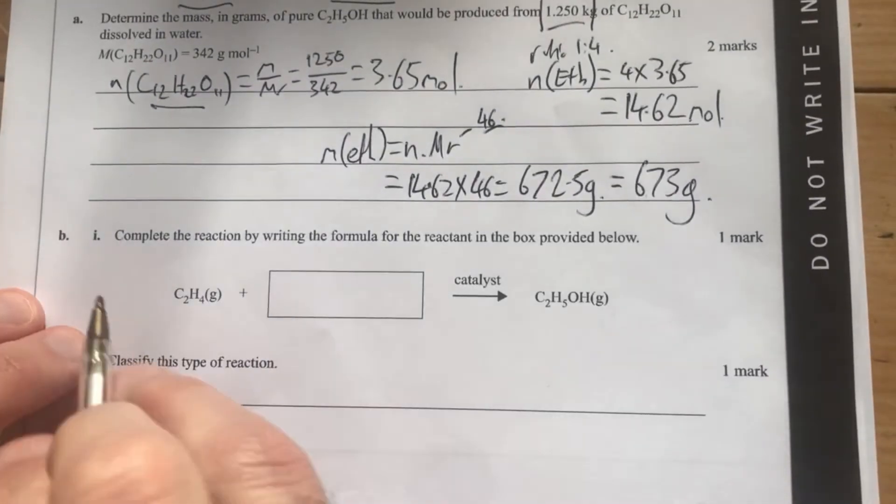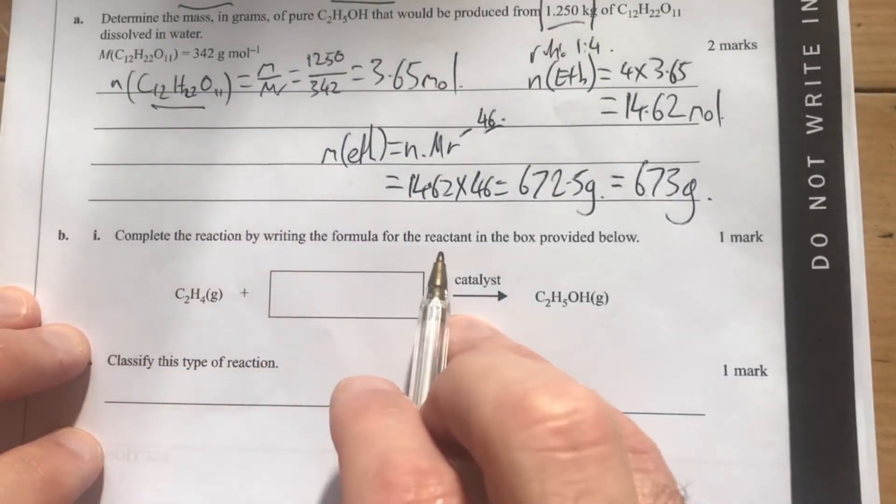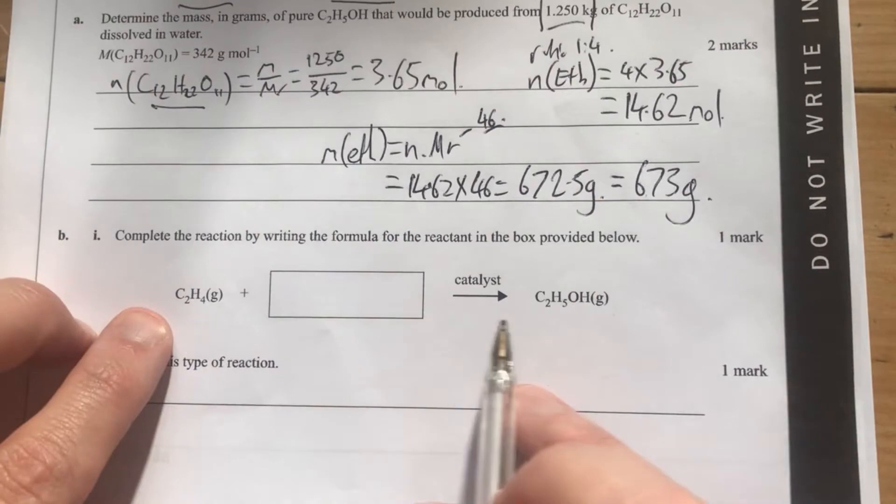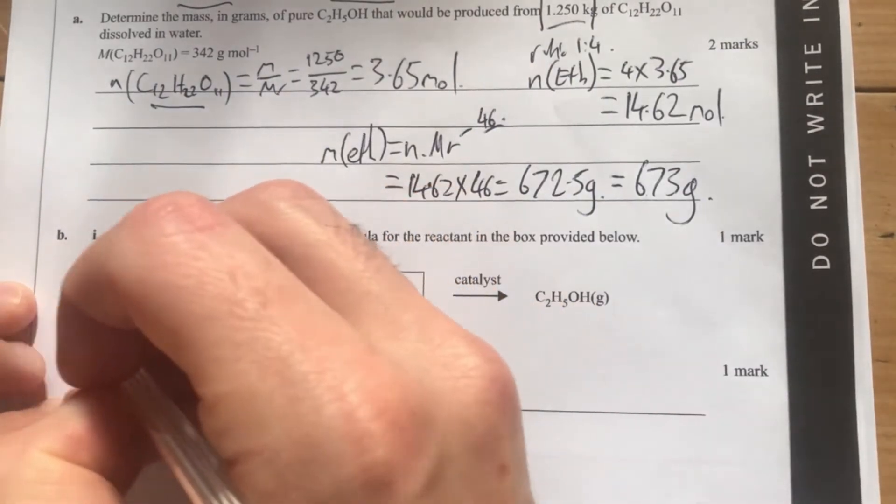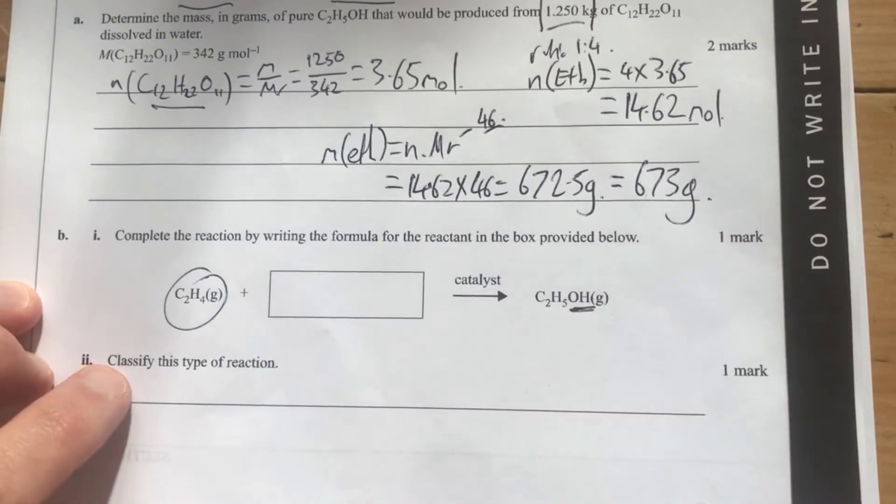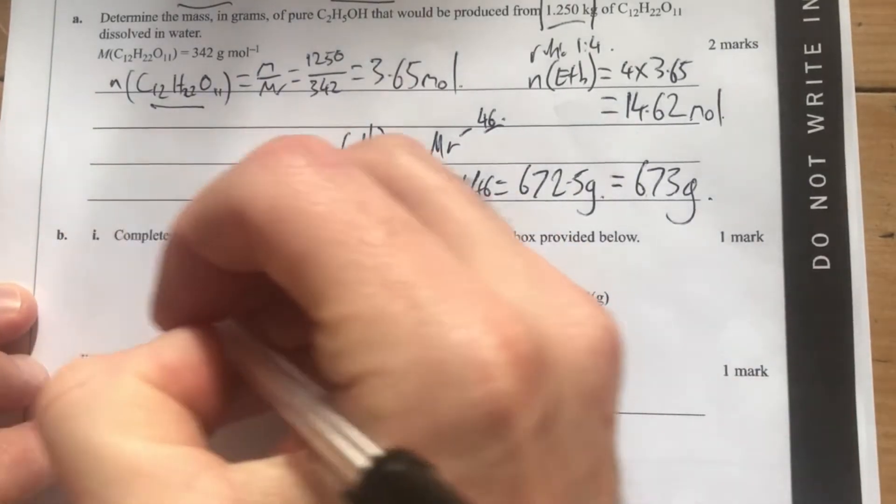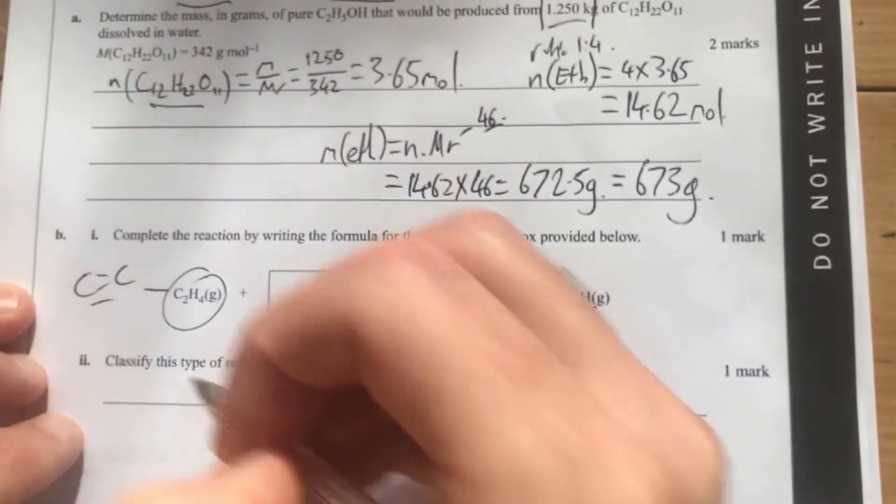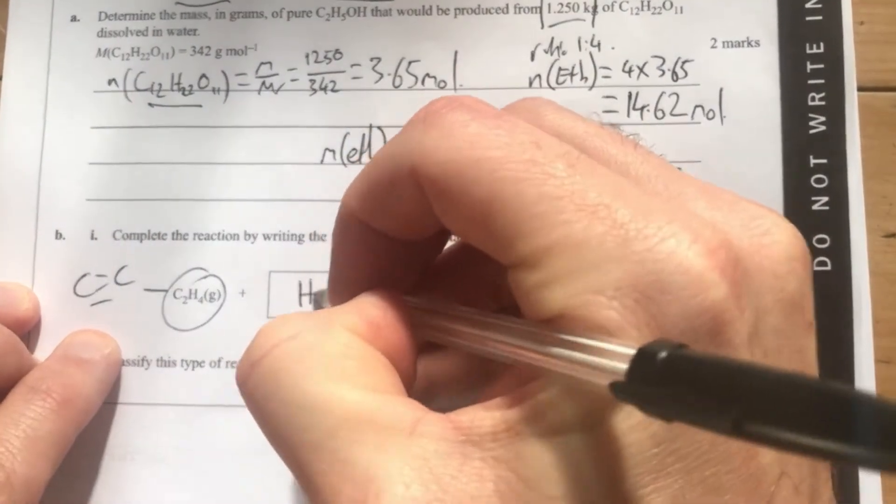Moving on to part B. Complete the reaction by writing the formula for the reactant in the box below. Now, obviously what's happening is I've got my ethene, which is then converting into my alcohol. So this is looking at my reaction chemical pathways. It's a double bond, so what do I need to add to it? It's simply going to be H2O.